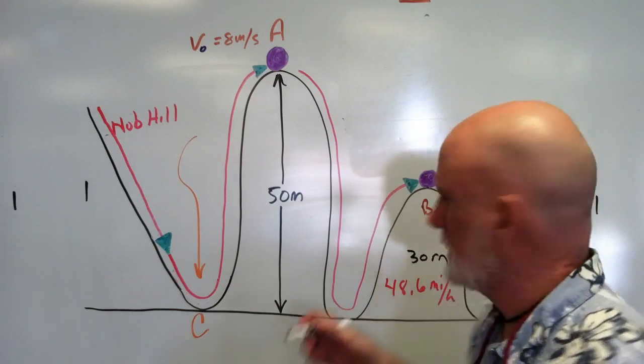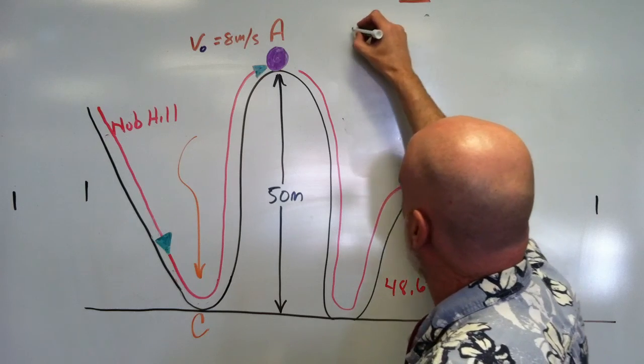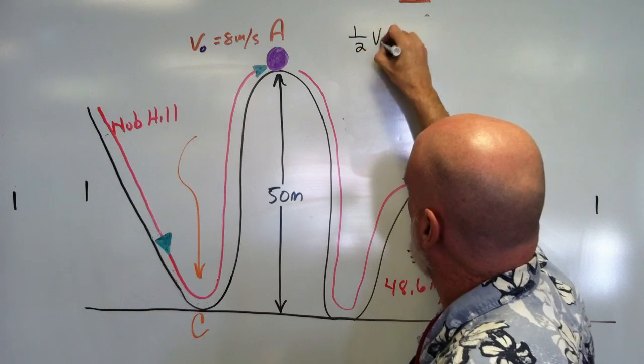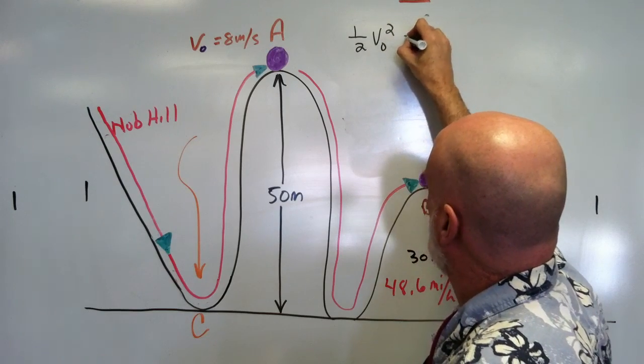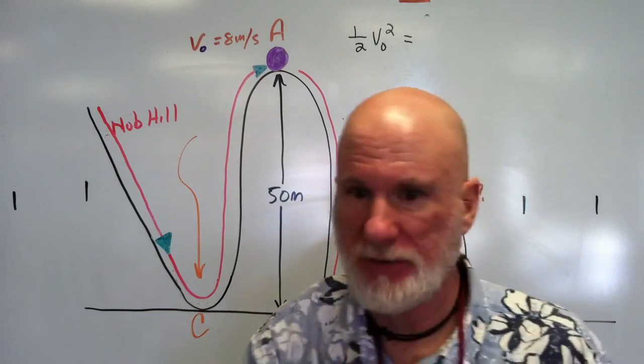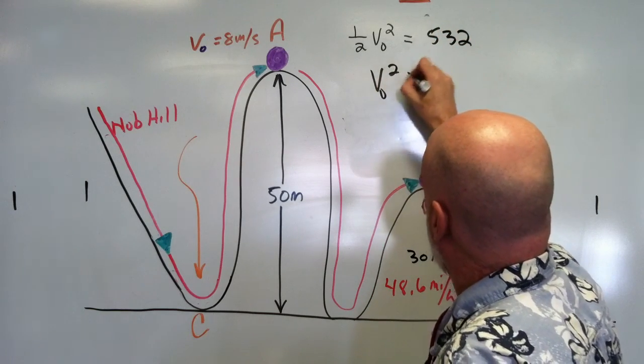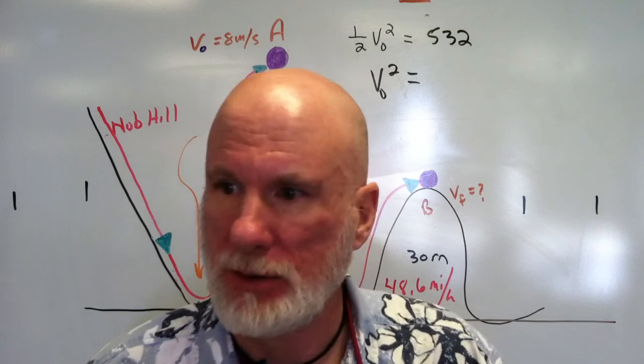So what is it? What is the original? It says ½V₀² equals 532, right? Okay, multiply both sides by 2.